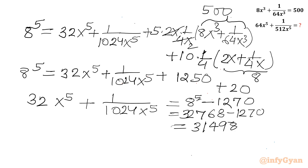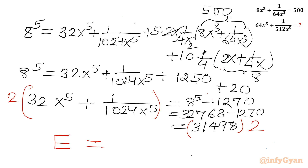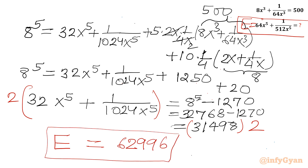Multiplying the left-hand side by 2 gives our required expression E. So 64x⁵ + 1/(512x⁵) = 2 × 31498 = 62996. This is our final answer using binomial expansion. Do not forget friends to like, share, and subscribe. Bye-bye till next video, good luck, take care!